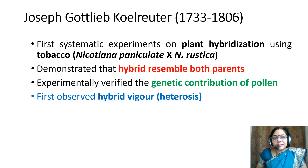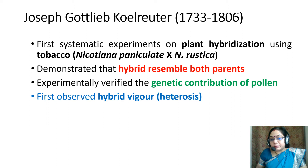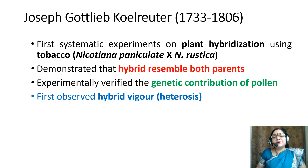Joseph Gottlieb Kölreuter, from 1733 to 1806, conducted the first systematic experiment on plant hybridization using tobacco — Nicotiana paniculata and Nicotiana rustica. He demonstrated that hybrids resembled both parents, experimentally verified the genetic contribution of pollen, and was the first to observe hybrid vigor, that is heterosis.